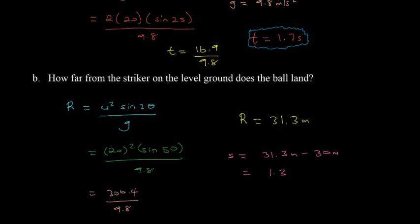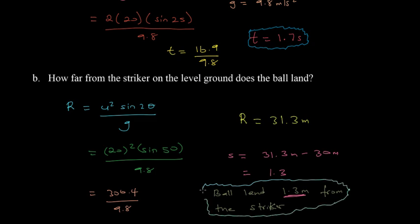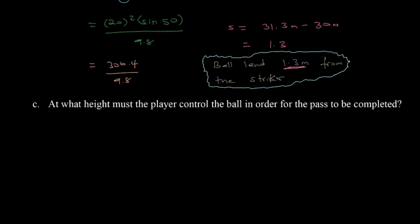This is what we would have gotten for part b. Let's see now what's next. Part c now says we're to find at what height must the player control the ball in order for the pass to succeed.